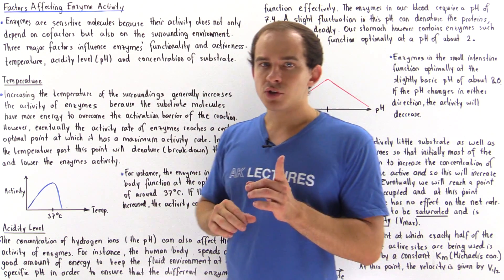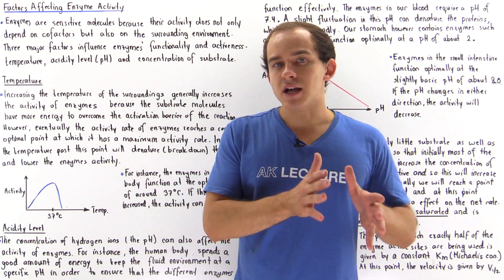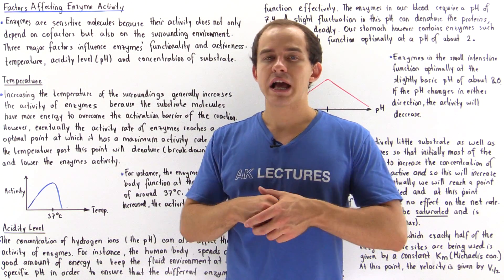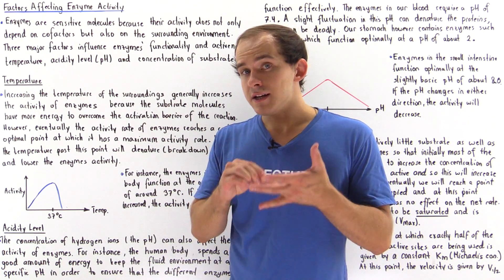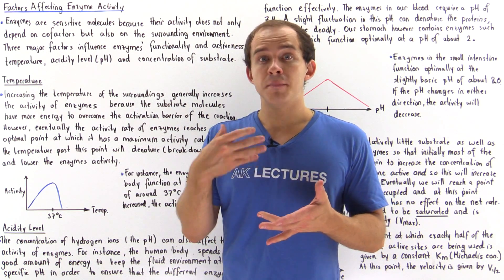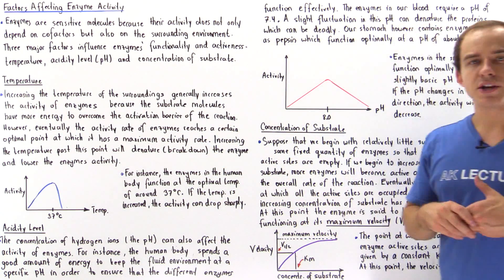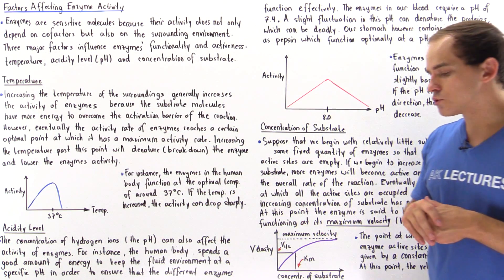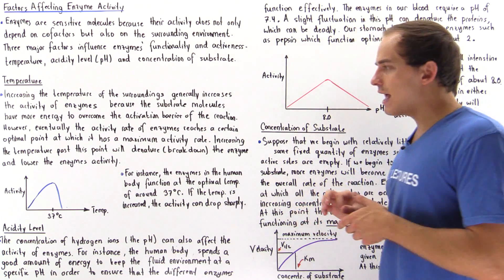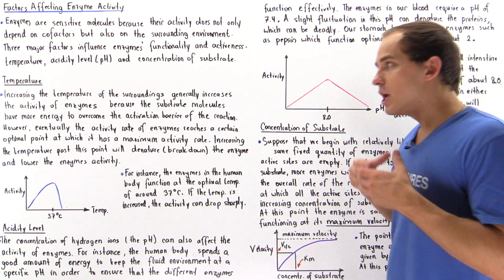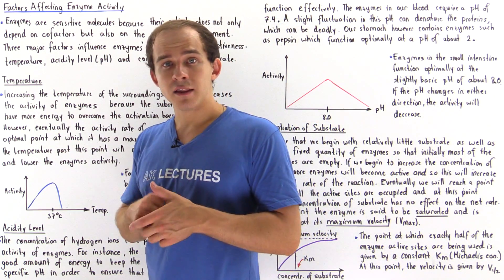Three major factors influence enzyme activity and functionality, and these are temperature, the acidity level — so the pH level — as well as the concentration of the substrate. Let's examine each one of these factors and see how they influence our enzymes' functionality.